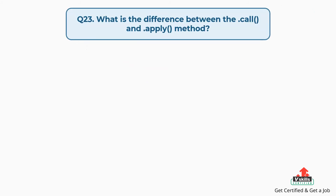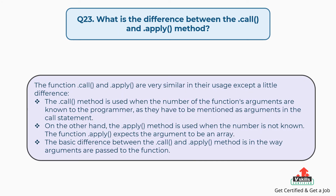Question number twenty-three: what is the difference between the call and apply method? The function call and apply are very similar in usage except a little difference. The call method is used when the number of the function's arguments are known to the programmer, as they have to be mentioned as arguments in the call statement. On the other hand, the apply method is used when the number is not known, and it expects the argument to be an array. The basic difference between call and apply is in the way arguments are passed to the function.